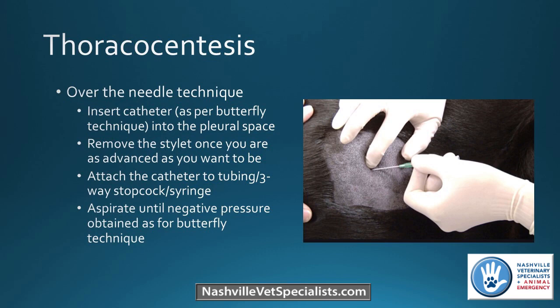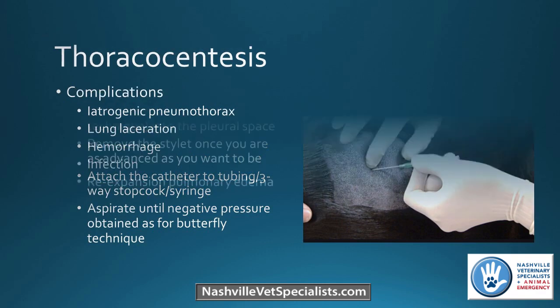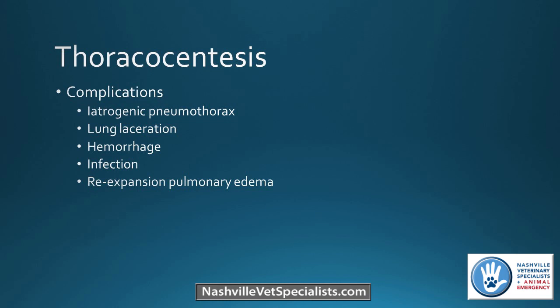Once you remove the stylet, attach the catheter to the tubing, three-way stopcock, and syringe, then aspirate as before. Complications include iatrogenic pneumothorax — usually mild and not life-threatening — lung laceration, hemorrhage, and infection if sterile technique isn't used. Re-expansion pulmonary edema is rare but can occur with chronic pleural effusion. Also, avoid stressing the patient too much; for a very stressed cat, definitely use sedation beforehand.